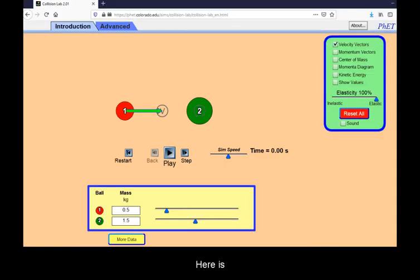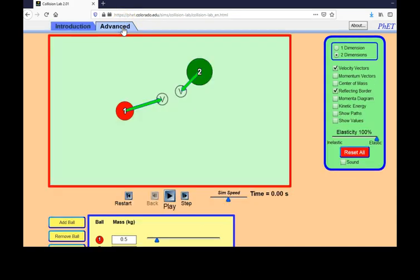Here is the setup we will use. We will switch to advanced. We will be using only one ball. We will slow the simulation down.